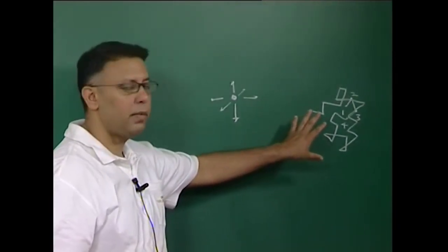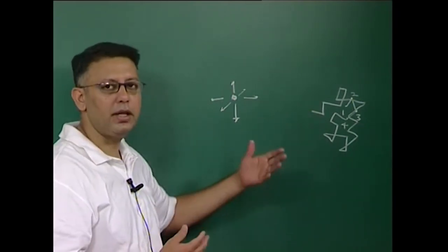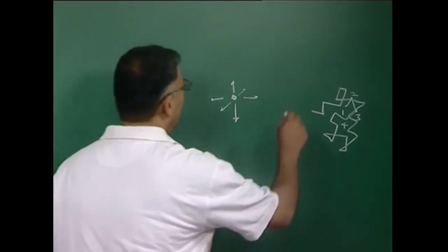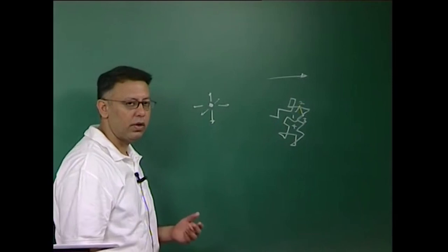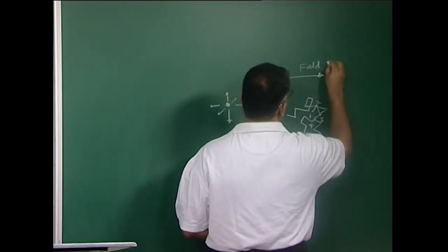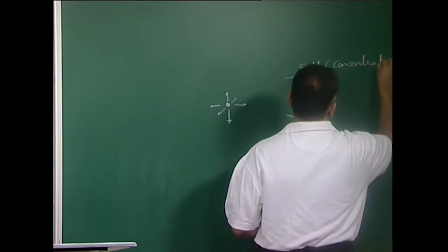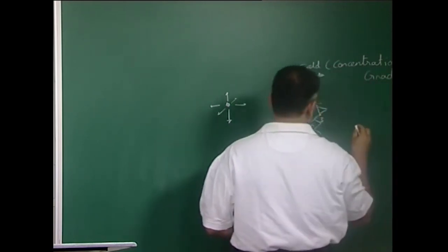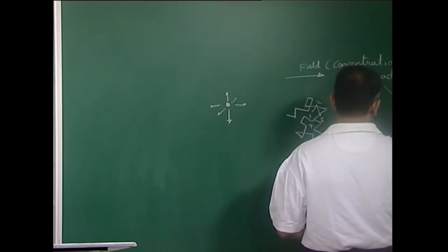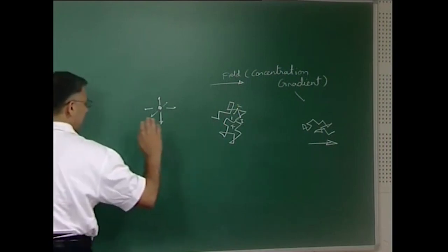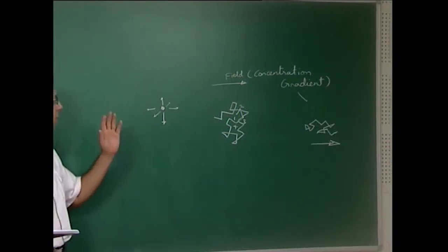In the absence of a concentration gradient, there is no net flow; the atom essentially remains in its vicinity and its average position over time is as good as remaining in the same place. But if a concentration gradient is applied—which could also be an electric field or stress-driven—then these random jumps in the presence of the gradient lead to net flow of matter, with overall motion down the concentration or chemical potential gradient.